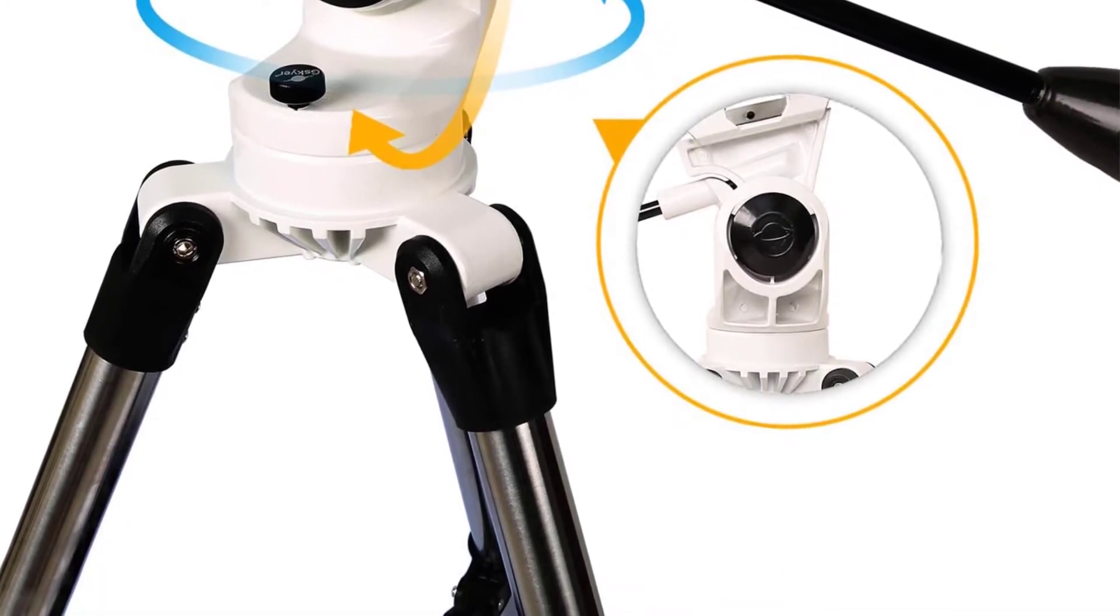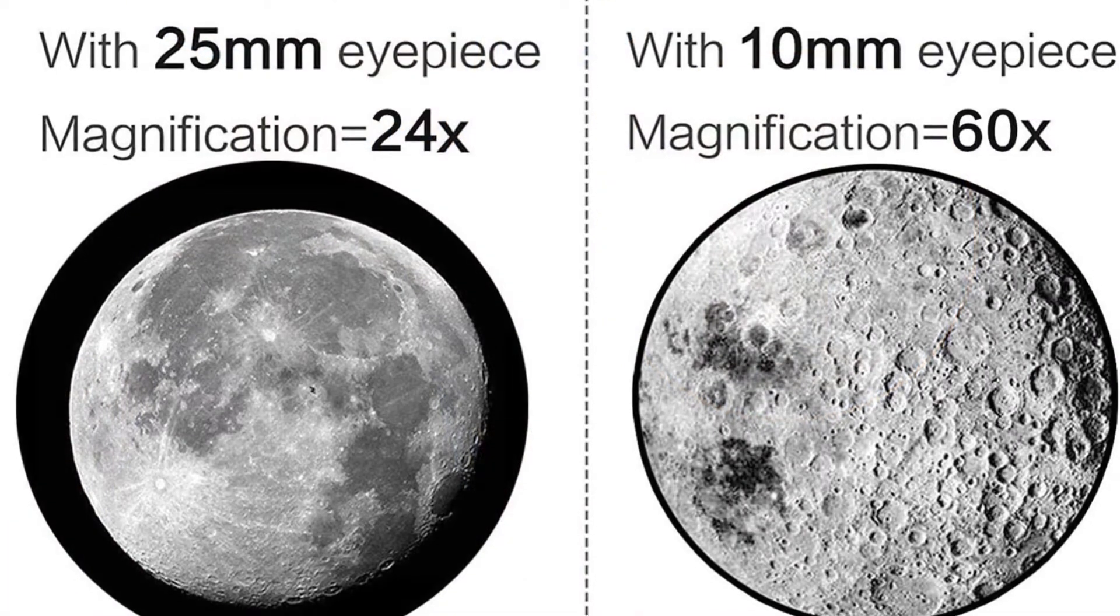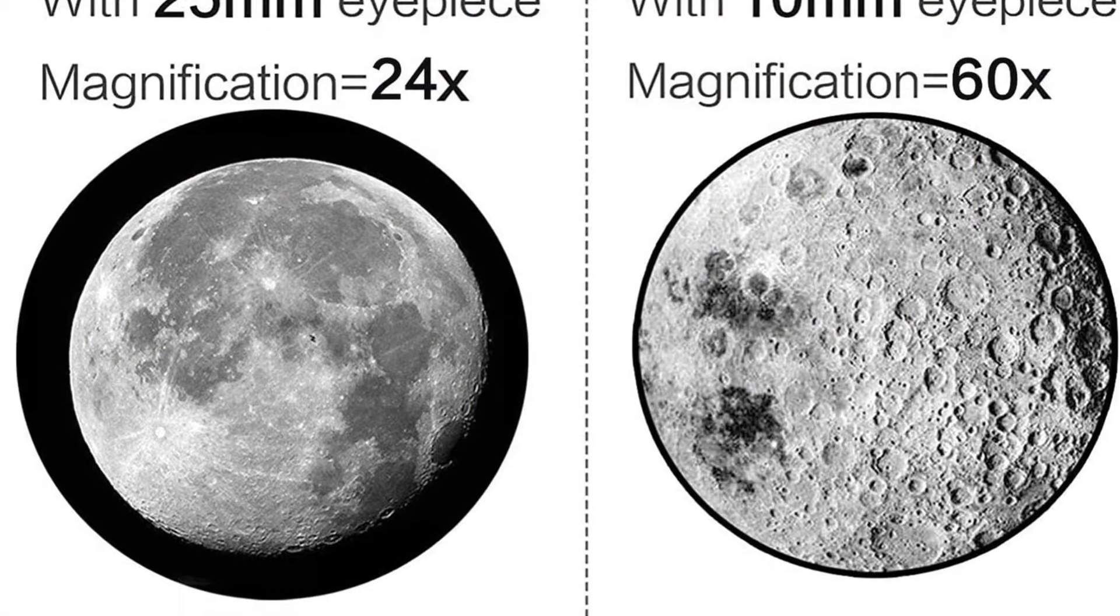Distant objects, like planets or the moon, are clear and detailed, while wildlife and other nearby objects are brought in for closer inspection.